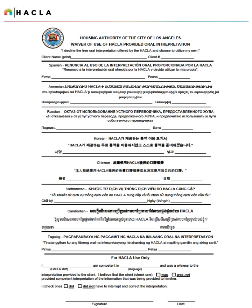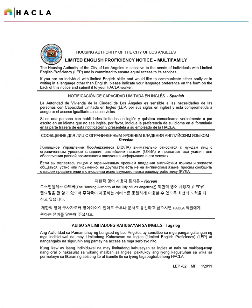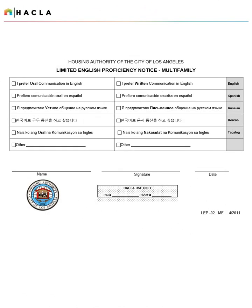If an applicant chooses to waive their use of HACLA-provided oral interpretation, they may print their name on this form. HACLA is sensitive to the needs of individuals with limited English proficiency and is committed to ensuring equal access to its services. If an applicant with limited English skills would like to communicate either orally or in writing in a language other than English, please indicate that language preference on the back side of this notice. The head of household should complete, print their name, sign, and date.